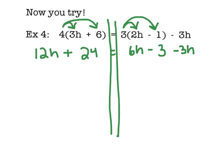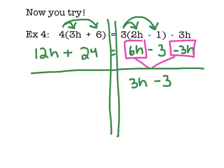Alright, let's take a look for like terms. There are no like terms on the left-hand side of the equal sign, so let's move over to the right. On the right, I see 6h, minus 3h. 6h minus 3h is going to give me 3h. I still have minus 3 with that. On the left, I still have 12h, plus 24.